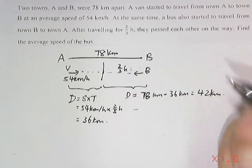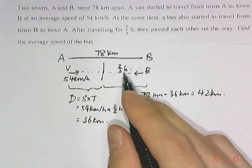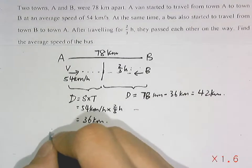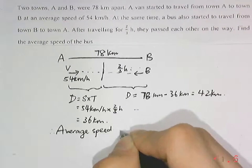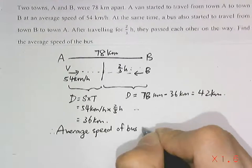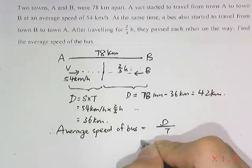The bus also traveled 2/3 hours. We have the distance, we have the time, we can find the speed. The average speed of the bus equals total distance divided by total time.